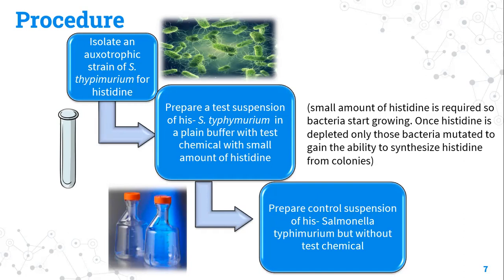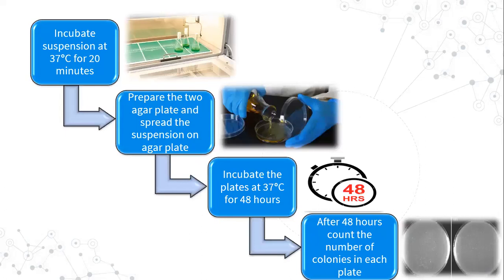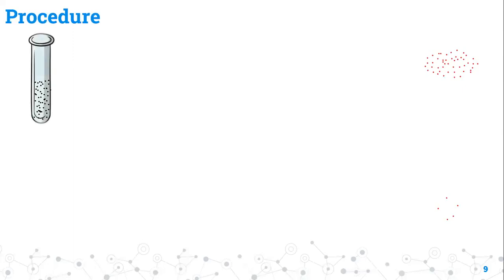We also prepare a control suspension to compare the ability of the test chemical to grow colonies. In the control suspension we do not add the test chemical; all other things remain the same. We then incubate both suspensions at 37°C for 20 minutes. After incubation we spread both suspensions on agar plates, then incubate both plates at 37°C for 48 hours. After 48 hours we count the number of colonies on each plate and compare them.